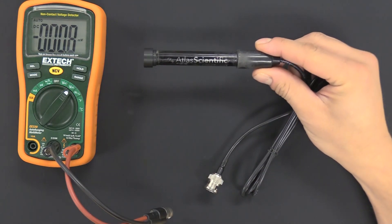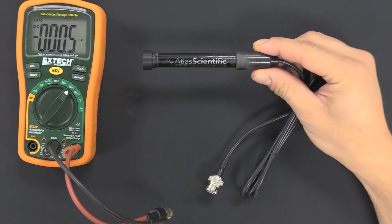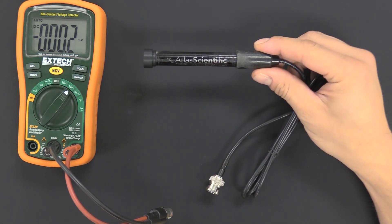This is an old DO probe that we had in our fish tank for about two and a half years. It started giving unusually low readings, and we thought it's time to recondition the probe.